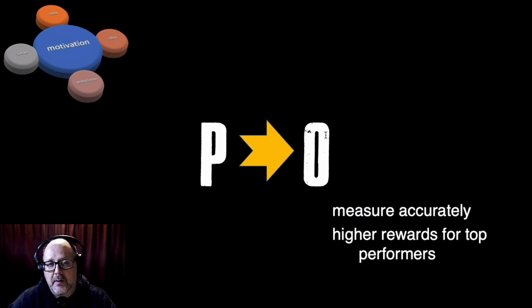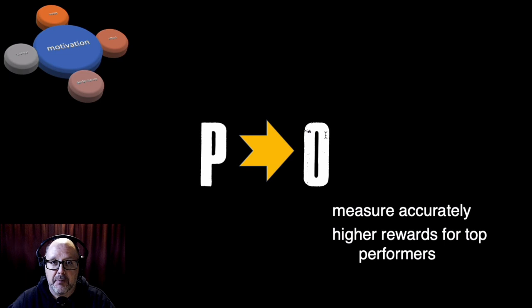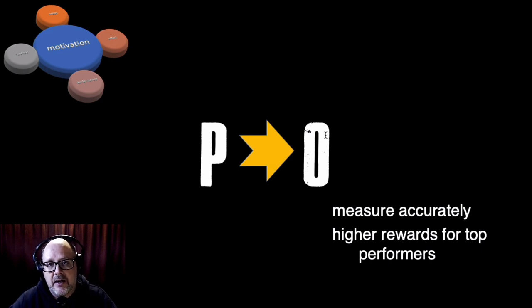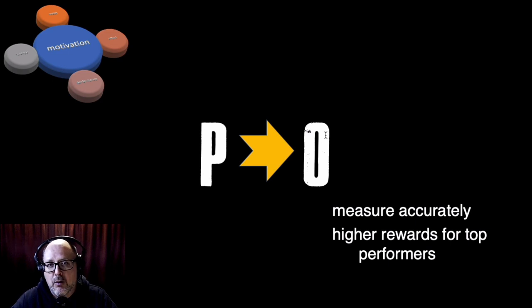To make sure we're motivating our employees well enough, there are a couple of things to keep in mind when it comes to outcomes. First, we need to measure them accurately — how well do we know that the outcome is matching the performance level and is in direct relationship to the effort put forth? Also, higher rewards are reserved for those who are top performers. Those who perform better tend to get better rewards.